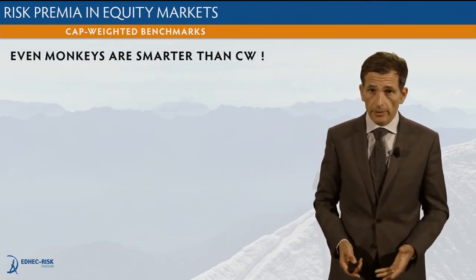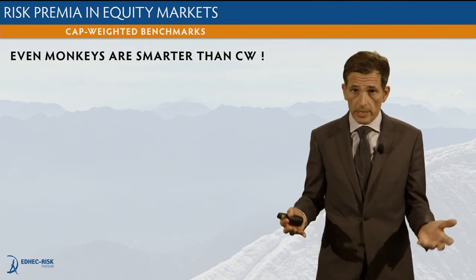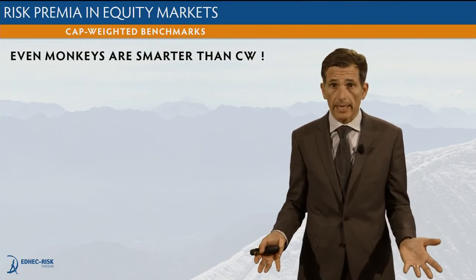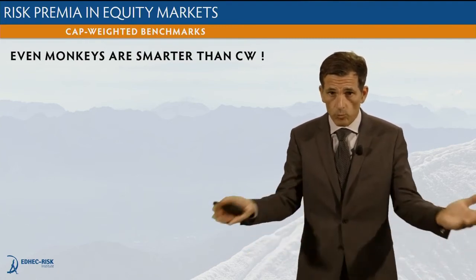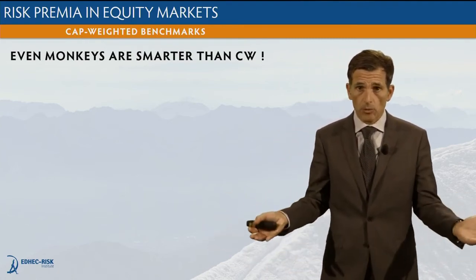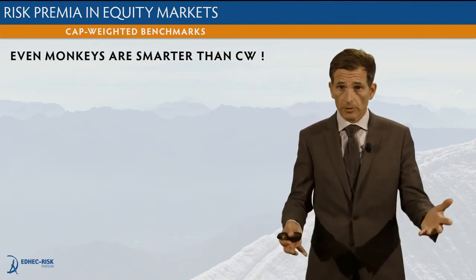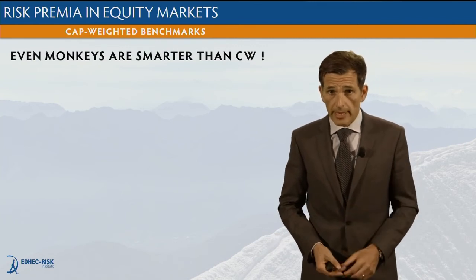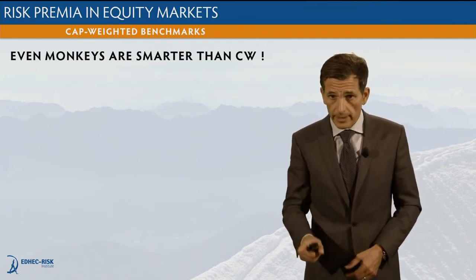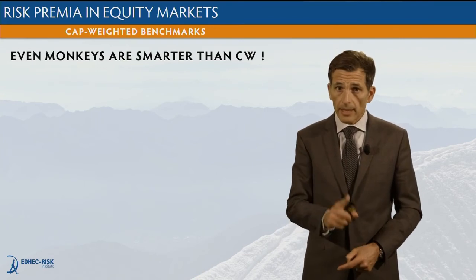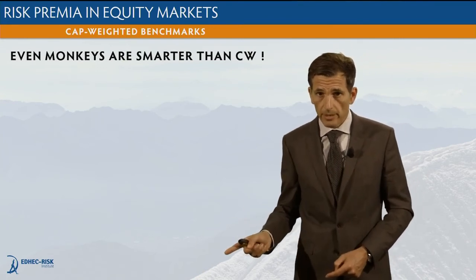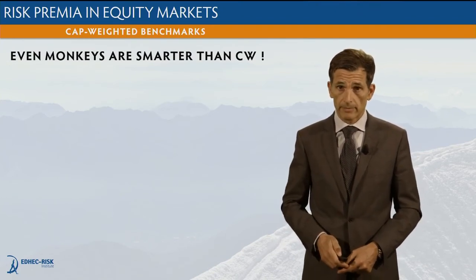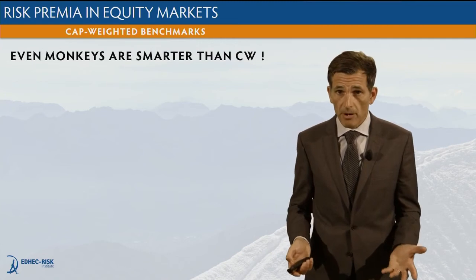This is interesting because equally weighted is not really smart — it's not a super sophisticated weighting scheme. It is as simple as it gets: 1 over N. Given N stocks, you invest equally weighted. With 100 stocks, you go 1% in each one. It actually turns out the situation is even worse than this: not only are naive portfolios better than cap-weighted, but even monkey portfolios are actually smarter than cap-weighted. What exactly do we mean by a monkey portfolio?